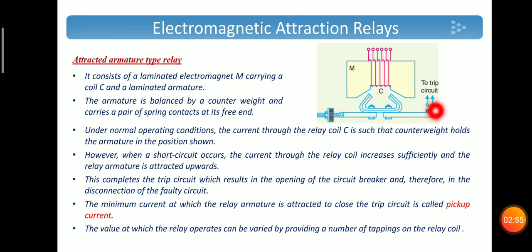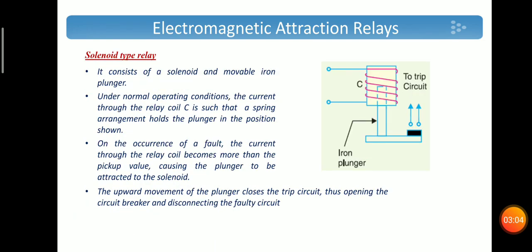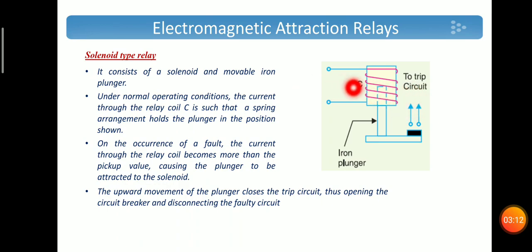The value at which the relay operates can be varied by providing a number of tappings on the relay coil. The next type is solenoid type relay. The principle is similar to that of the attracted armature type.